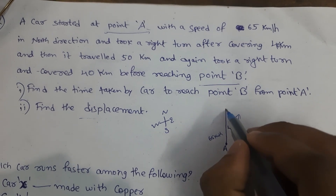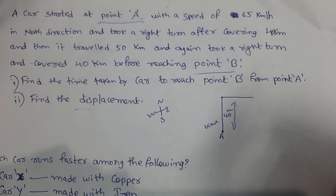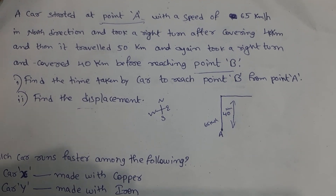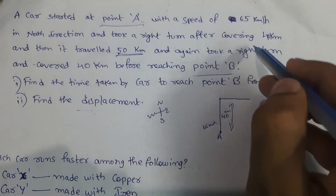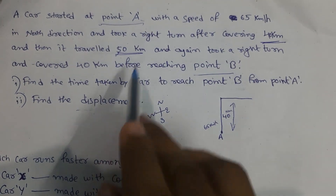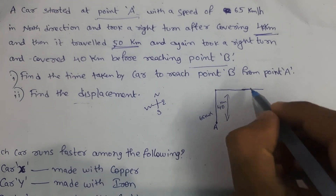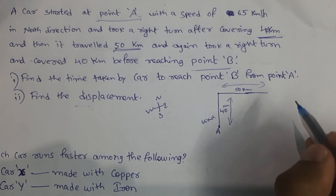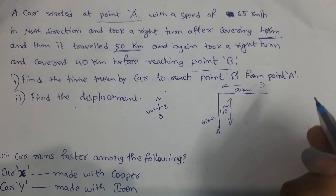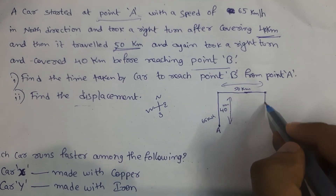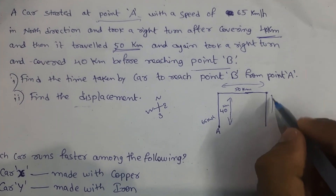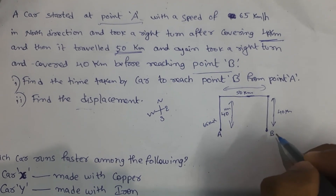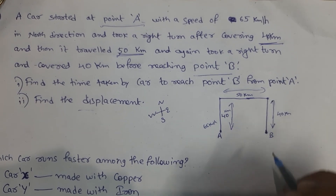After covering 40 kilometers it took a right turn, then traveled 50 kilometers in that direction. Again it took a right turn and covered 40 kilometers before reaching point B, which is its final position.